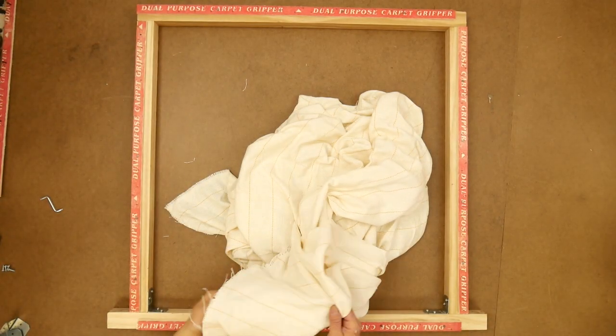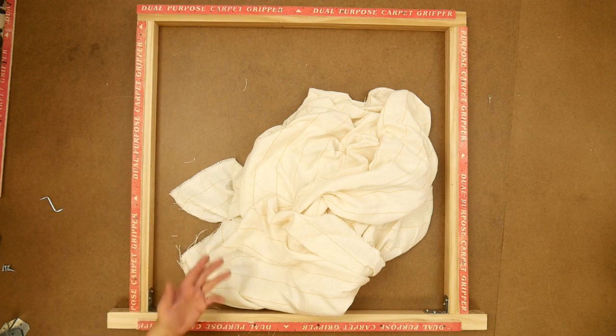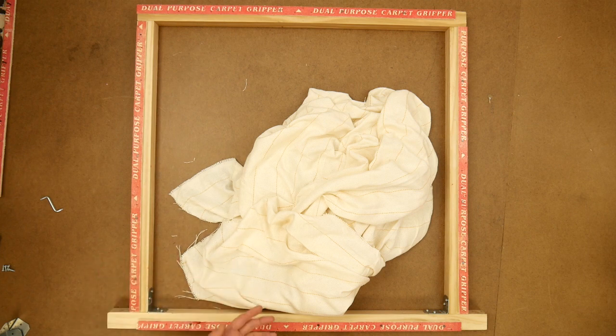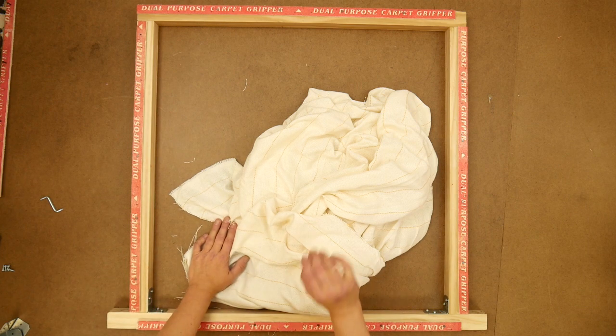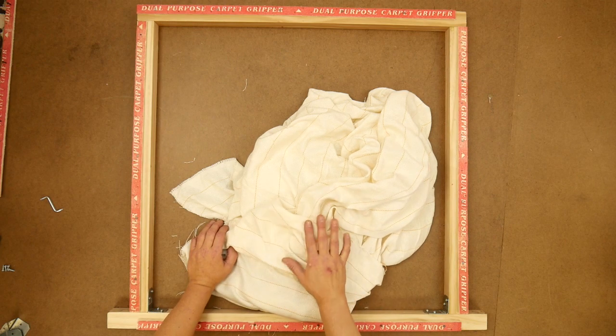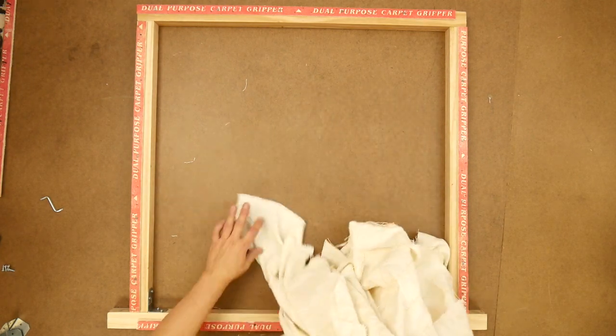This is the tufting cloth that I sell in the shop. You can use monk's cloth or linen or burlap, but the reality is those things aren't really up to the task of most machine tufting. We really recommend not wasting your time and money on those and just getting the real cloth.